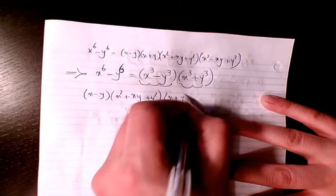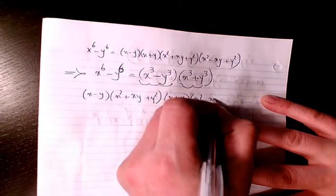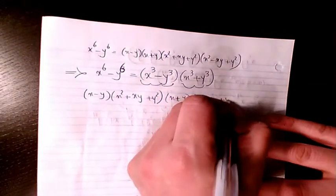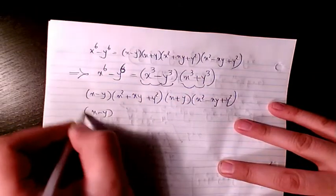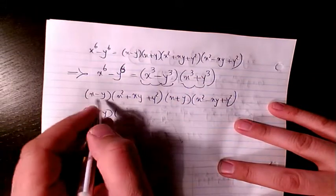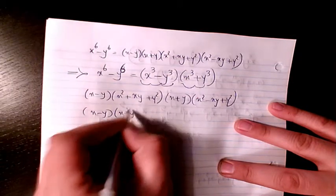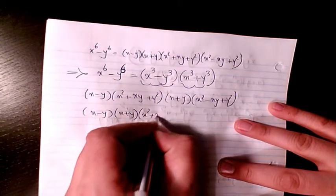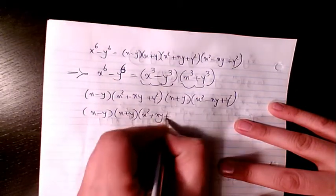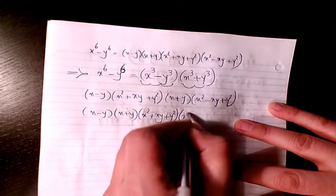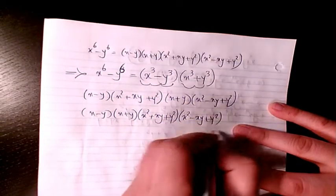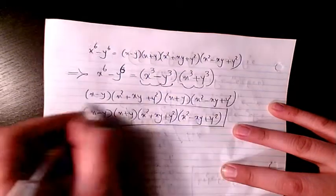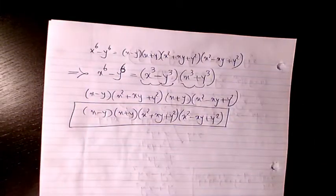For x cubed plus y cubed I can write x plus y, times x squared minus xy plus y squared. So rearranging it: x minus y, times x plus y, times x squared plus xy plus y squared, times x squared minus xy plus y squared — and that will be the final answer.